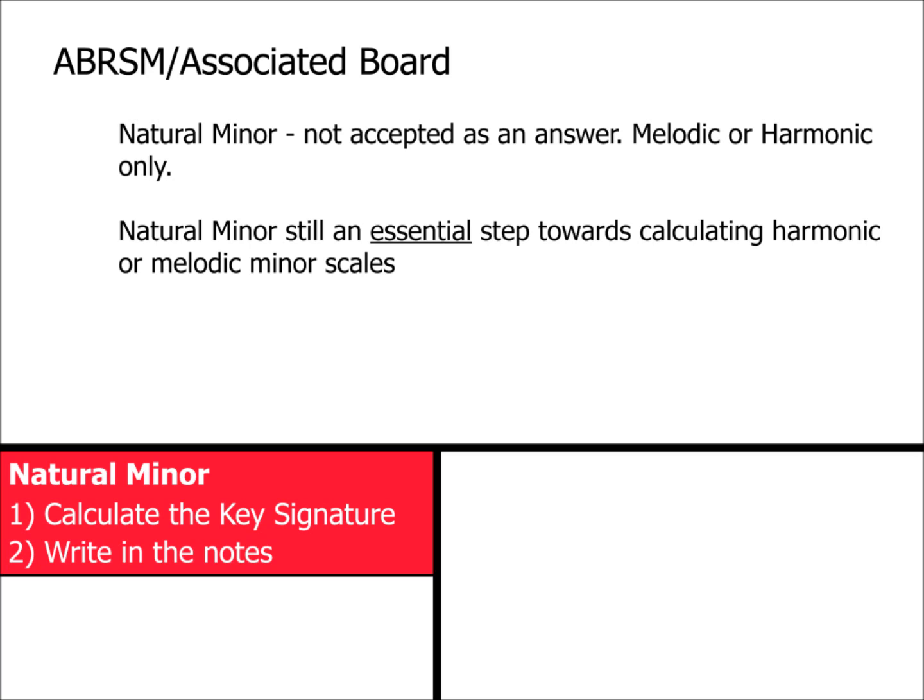the answer will either be melodic minor or harmonic minor, never natural minor. Or, the exam may ask you to write a minor scale and then detail which version you have written. You must write your answer as melodic or harmonic. There are rumours that the Associated Board may be changing their exams to include natural minors, but regardless of its usage in exams, it is still essential to understand natural minors to enable you to comprehend melodic and harmonic minors.